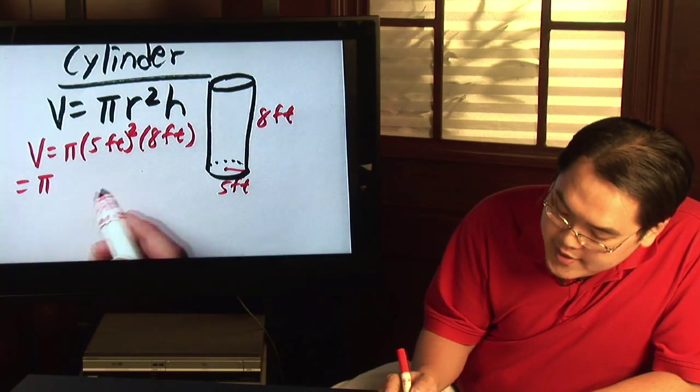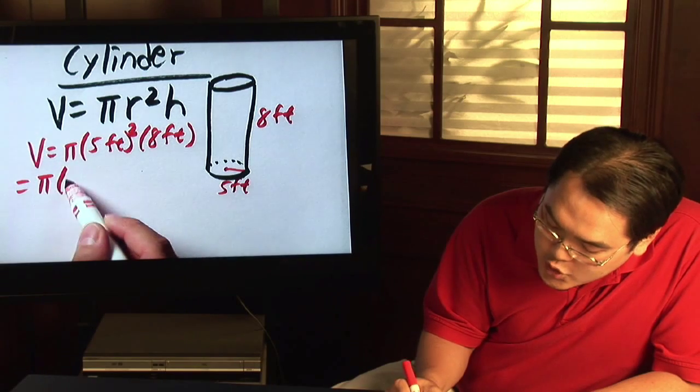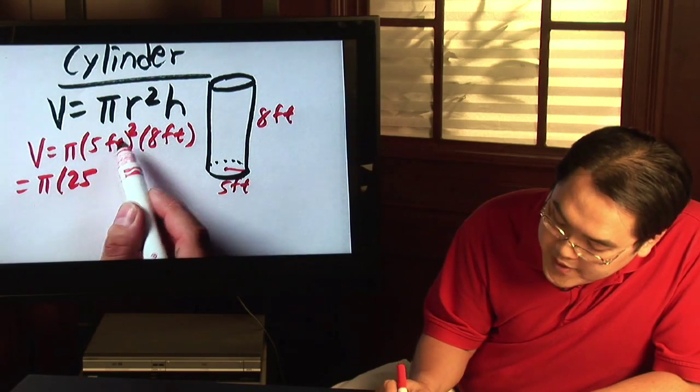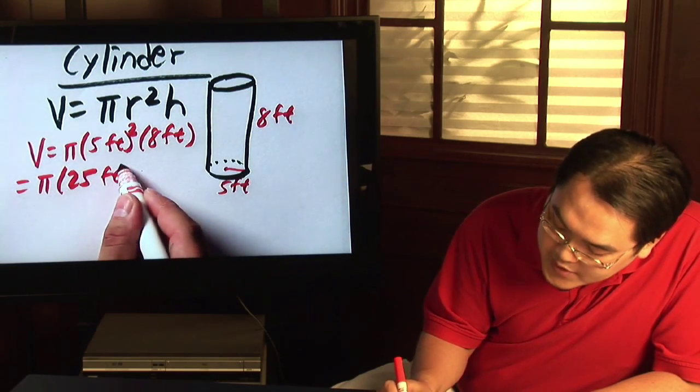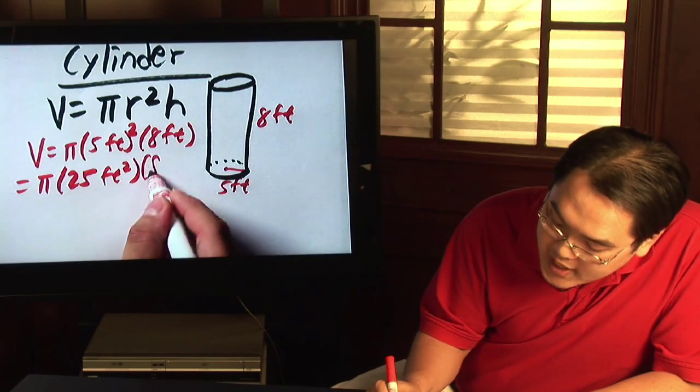So you have pi. Now five squared is twenty-five. Feet squared is feet squared times eight feet.